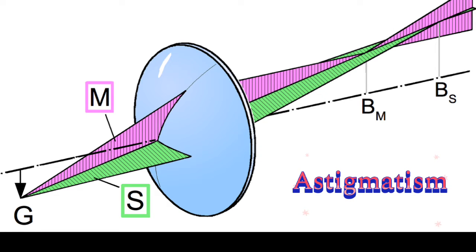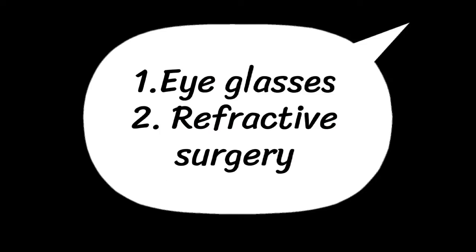The third aberration is astigmatism. In astigmatism, the rays that propagate in two perpendicular planes have different foci. In this picture, you have object G and two planes — one is the S plane and another is the M plane. Rays propagating in the S plane have an image at BS, while rays in the M plane have an image at BM, giving two foci. Astigmatism can be minimized by using eyeglasses, contact lenses, or refractive surgery.